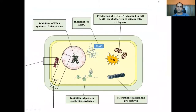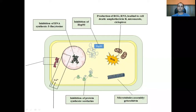These are the various antifungal drugs. Looking at this diagram of the fungal cell, inhibition of DNA synthesis is done by flucytosine. There are also inhibitors of HSP-90. Drugs like amphotericin B, miconazole, and ciclopirox are known to cause production of reactive oxygen species and reactive nitrogen species, causing cell death. Griseofulvin causes problems with microtubule assembly, and sordarins cause inhibition of protein synthesis.